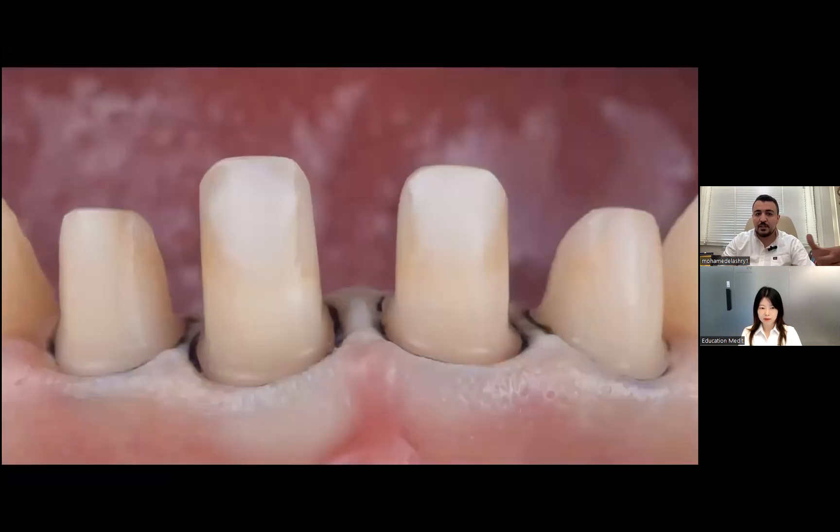Like in this scan, this is a prep of me. I did it for temporary restorations. You can see that I have barrier walls and very long teeth, very long adjacent teeth.